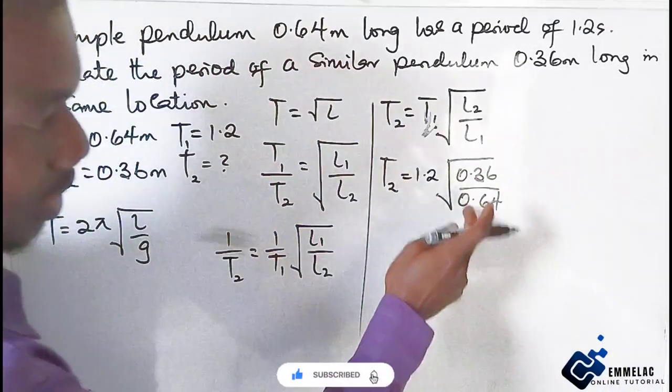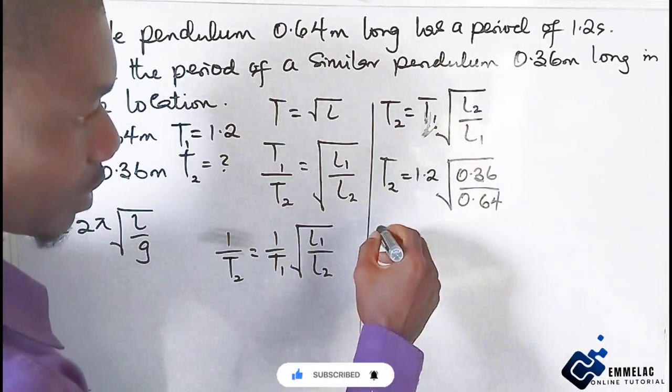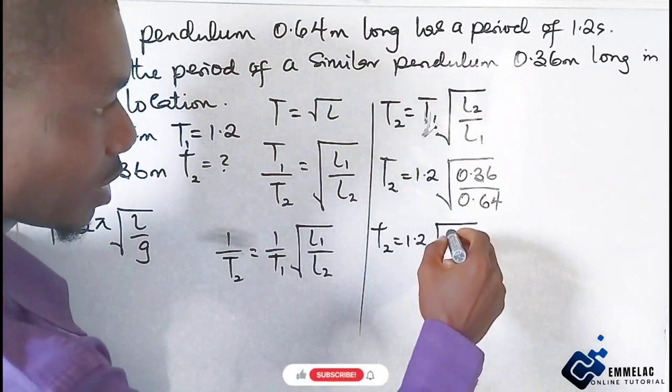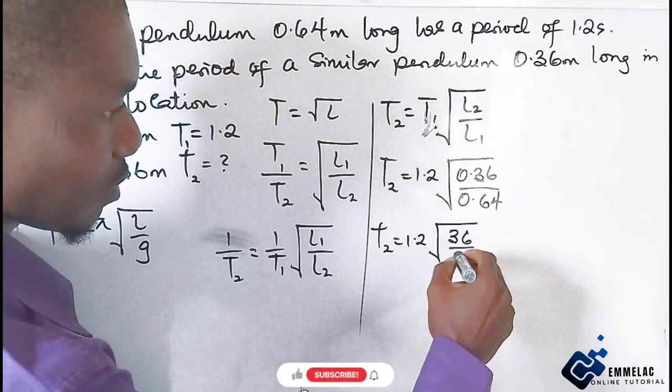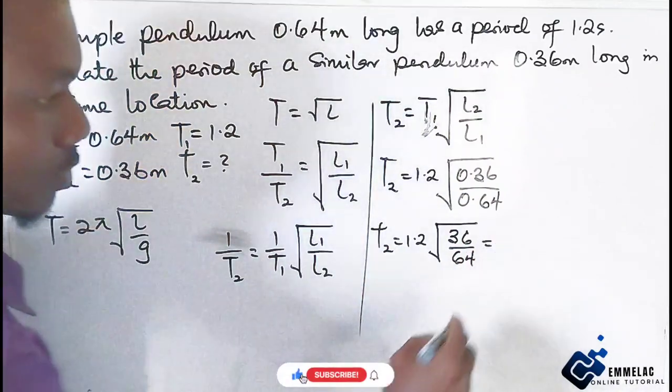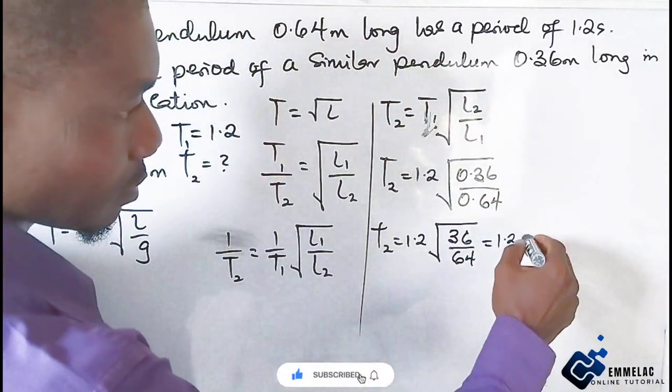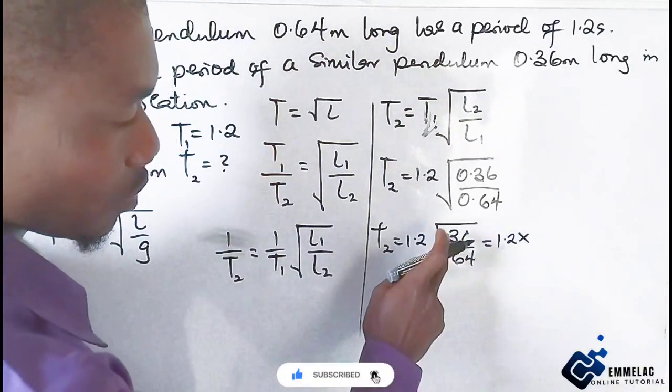Since they have the same decimal point, we can eliminate that. 1.2 will give us 36 over 64. So T2 equals 1.2 times the square root of 36 over 64, which is 6 over 8.